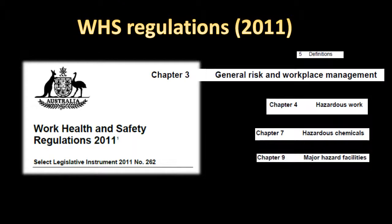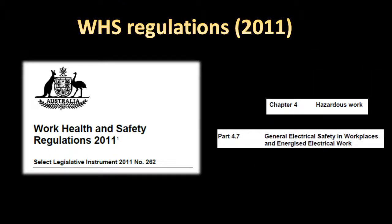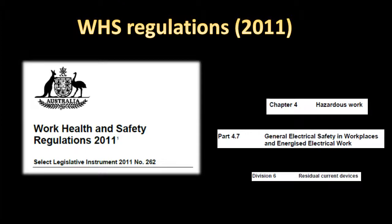Each chapter is further categorised into parts and divisions for ease of reference. For example, RCDs are covered in Division 6 of Part 4.7, which is contained within Chapter 4 of the regulations.